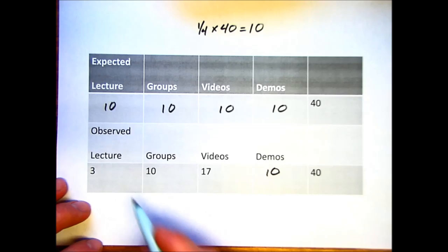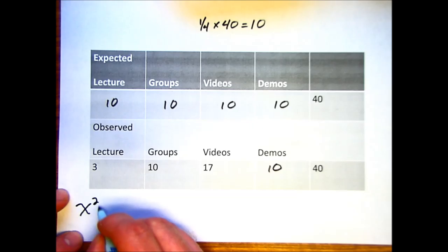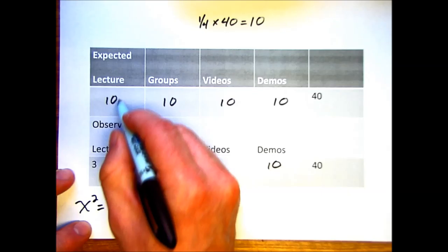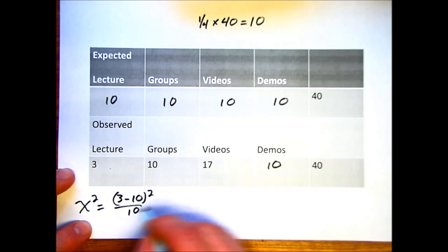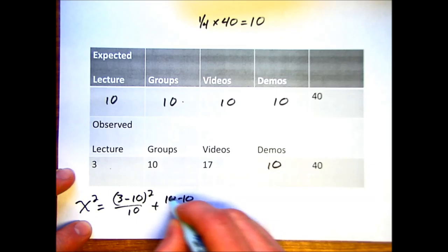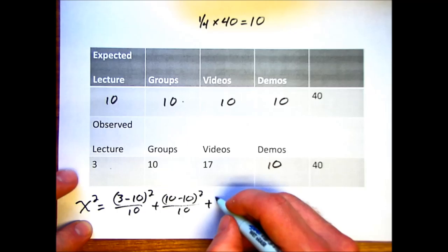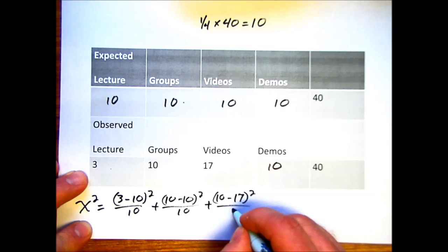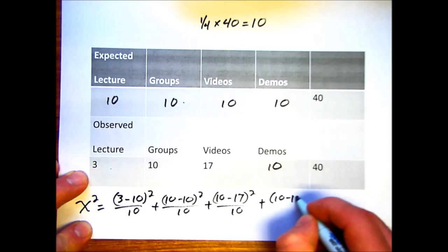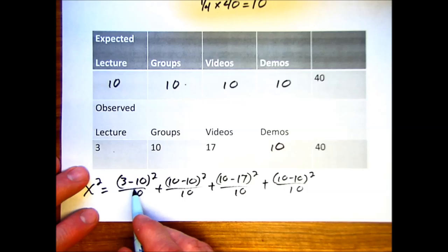Okay, so we've got this information, we've got our observed and expected. We've got everything we need to calculate the chi-square statistic. Okay, so we're taking our observed frequency minus the expected frequency. We'll square that difference and we'll divide by the expected frequency. We're doing it for each one of these cells. This is easy math, ten minus ten, squared, divided by ten, plus ten minus seventeen, squared, divided by ten, plus, again, easy math, ten minus ten, squared, divided by ten.